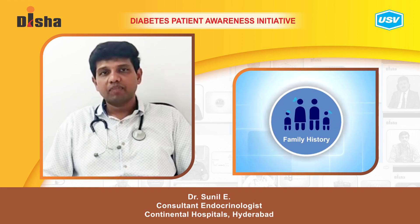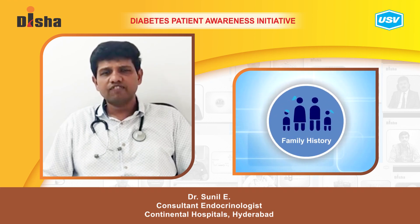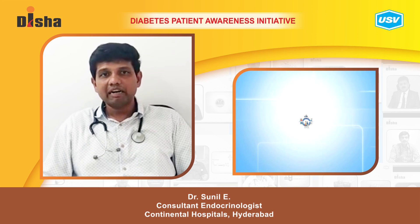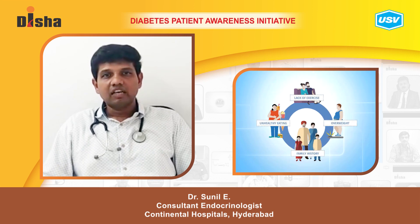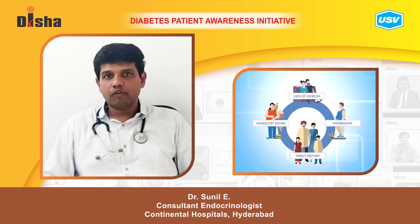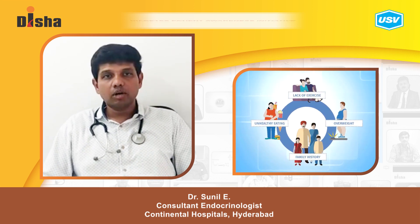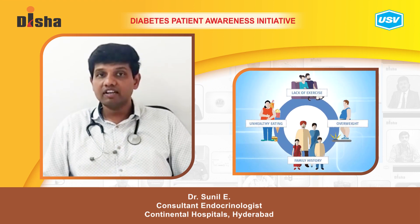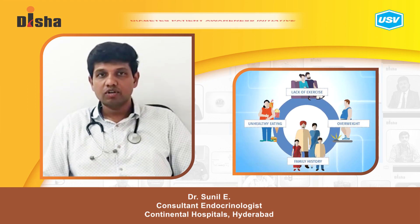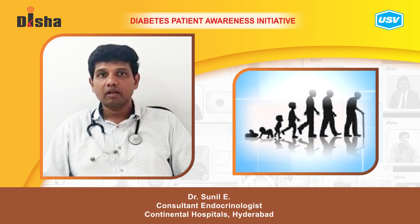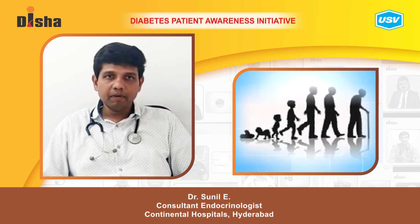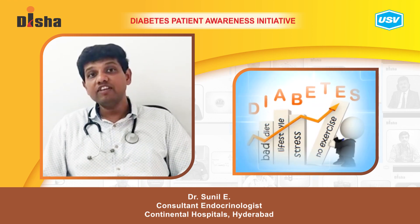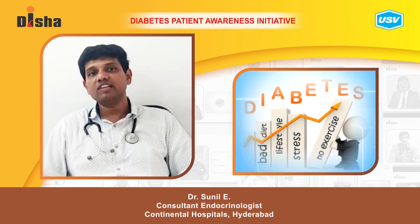At the same time, if a person has no family history of diabetes mellitus but does not eat healthy food and does not maintain a healthy lifestyle, they can still develop diabetes mellitus. So it is a combination of genetic predisposition and the environment in which those genes are expressed.